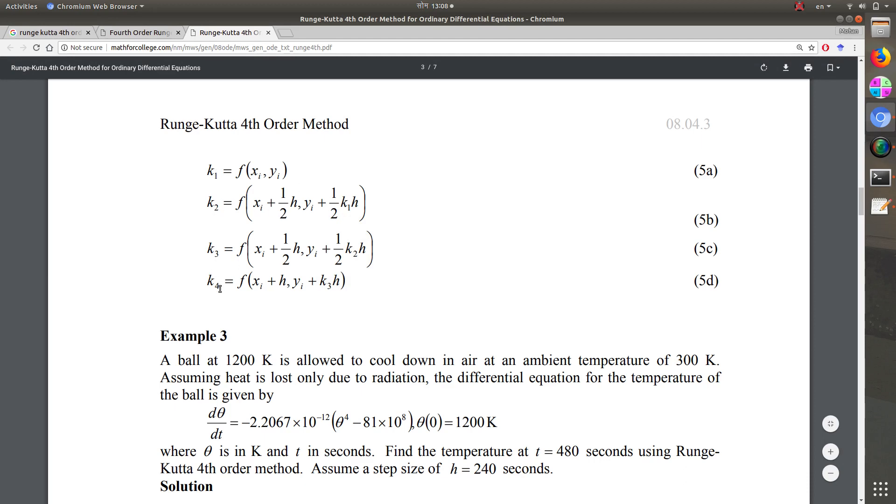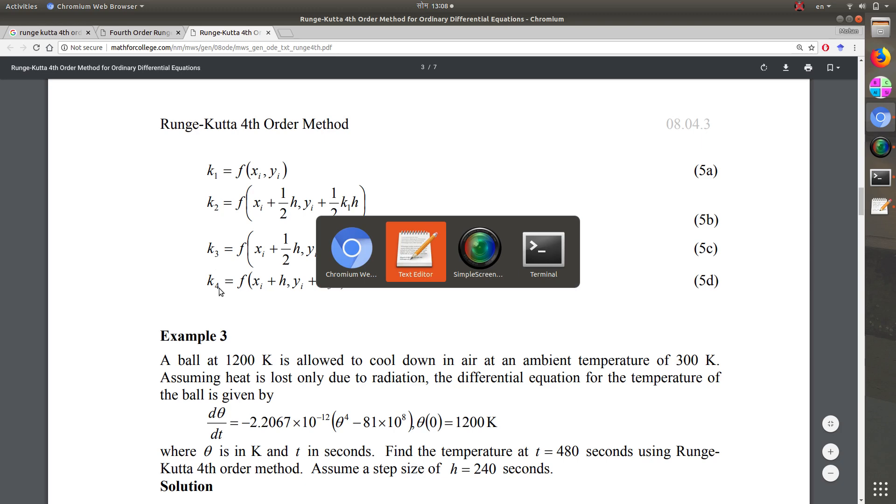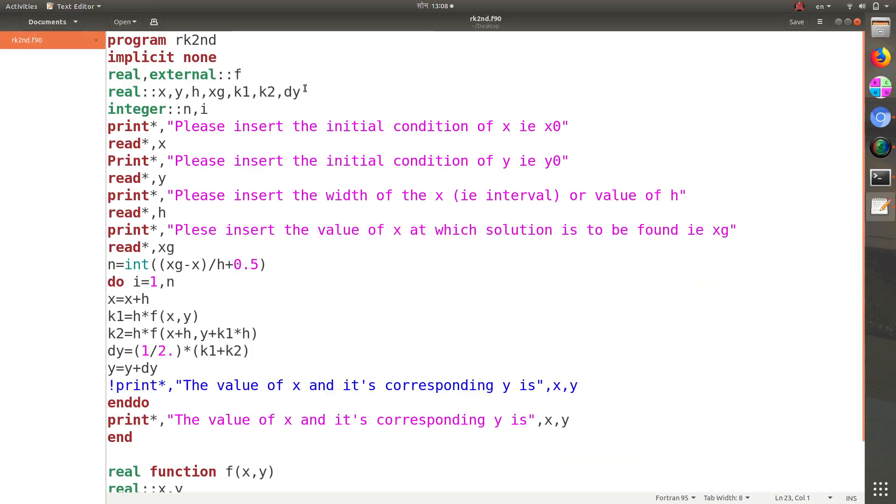k1 is same as in the second order. k2 is slightly different. We need to add k3 and k4 in the code. Let us define k3 and k4 as real variables. We have already defined dy over here.